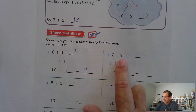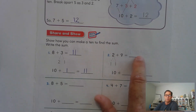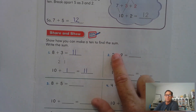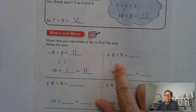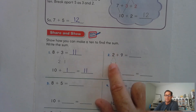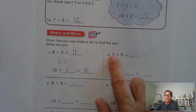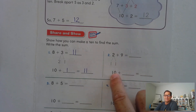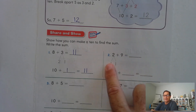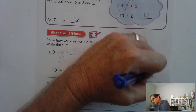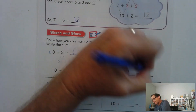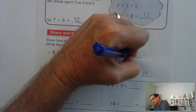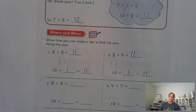Two plus nine equals what? Well, nine plus one gives me a 10. So break the two into one plus one, because nine plus one is 10, and then add the other one. So two plus nine is 11.